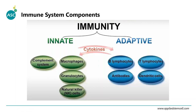In order for us to fully understand and appreciate what NSG mice are, we need to have a basic understanding of the immune system. The immune system can be broken up into two components: innate immunity and adaptive immunity. Innate immunity is the first line of defense against pathogens and foreign invaders, containing the complement system, macrophages, granulocytes, and natural killer cells.